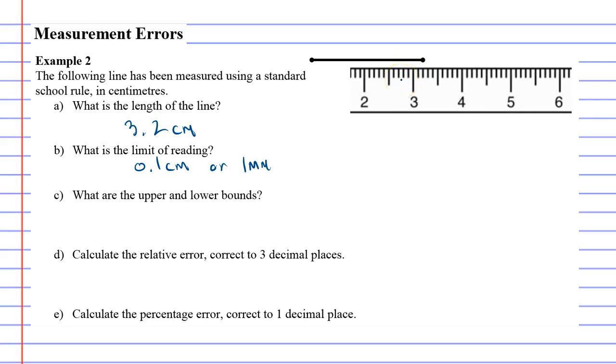Okay, now question C: what are the upper and lower bounds? If you think about it, we've measured at 3.2 centimeters. There are other things that also measure at 3.2 centimeters: for instance, 3.21 measures as 3.2 centimeters, 3.23, 3.24...